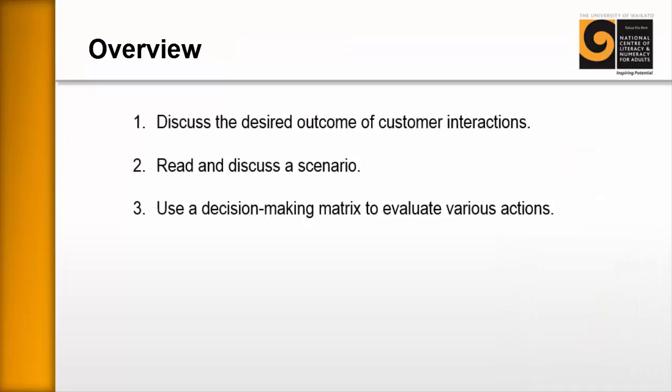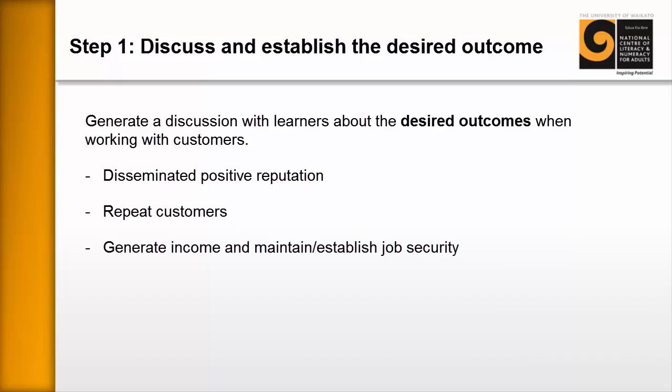First, we're going to discuss the desired outcome of customer interactions. Number two, then we're going to read and discuss a scenario. Number three, then we're going to use a decision-making matrix to evaluate various actions. Step one: discuss and establish the desired outcome. The objective of this discussion is to help learners understand that there are multiple outcomes of any interaction with difficult people.